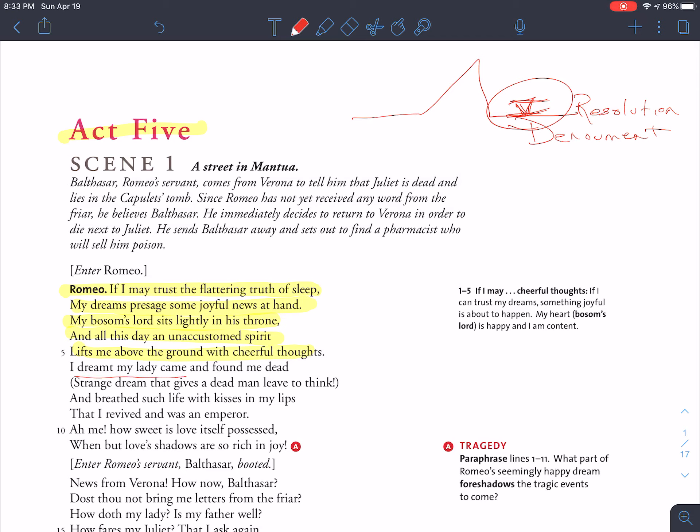I dreamt my lady came and found me dead. Strange dream that gives a dead man leave to think. And breathed such life with kisses in my lips that I revived and was an emperor.